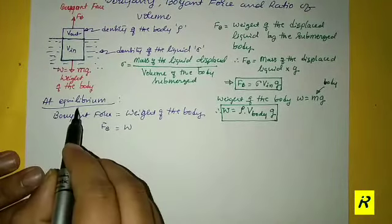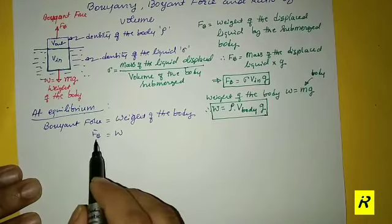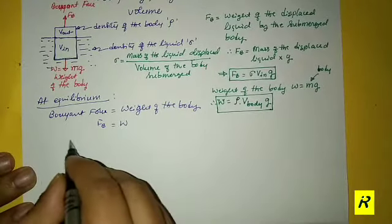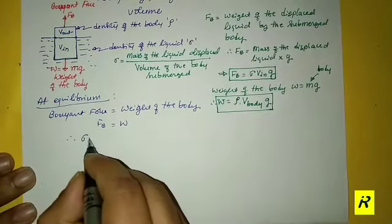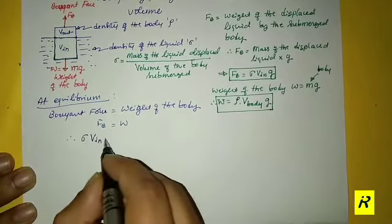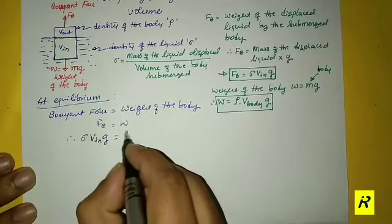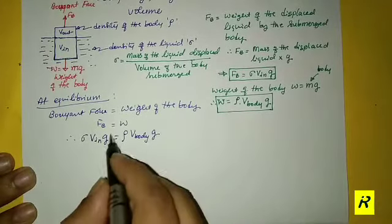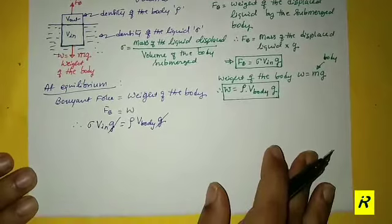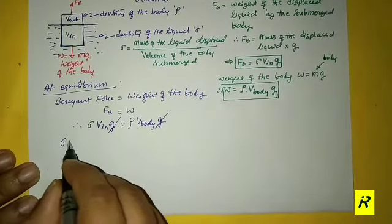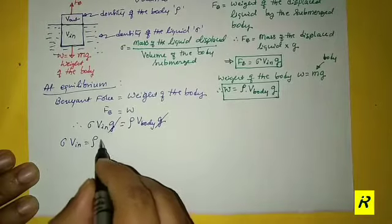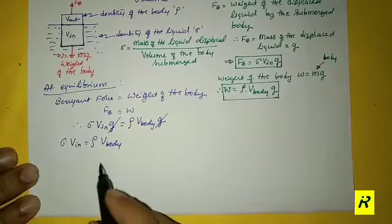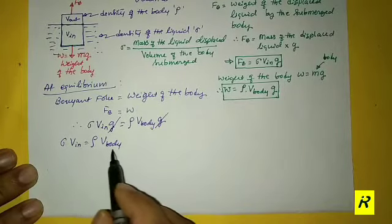Only at equilibrium does the buoyant force FB become equal to the weight of the body W. Therefore: σ·Vin·G = ρ·Vbody·G. The terms G cancel, giving us σ·Vin = ρ·Vbody.